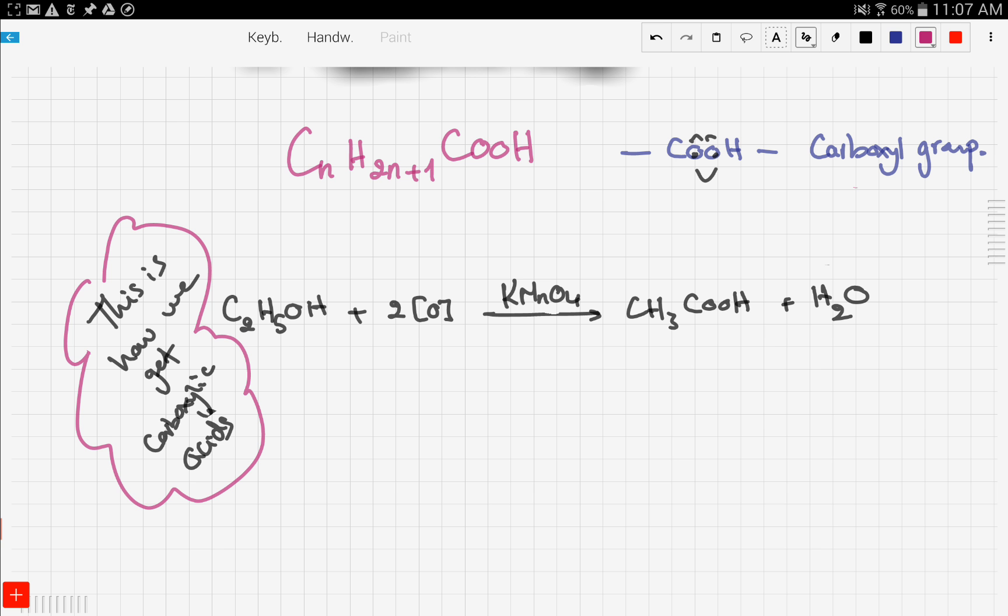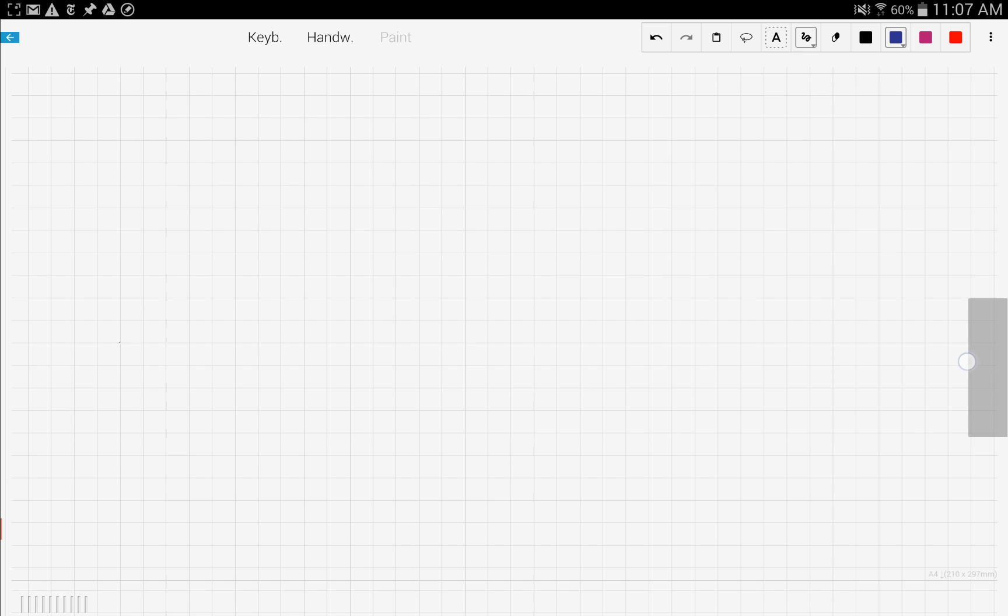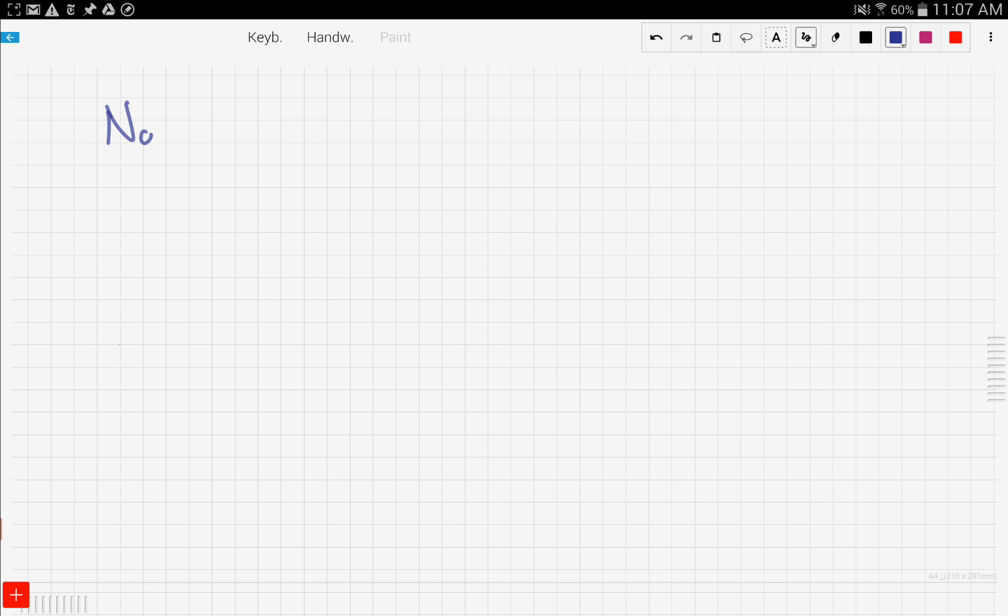Now let's move on to naming the carboxylic family. So now let's talk about naming and structure. Let's put the formula here: CnH2n+1COOH.